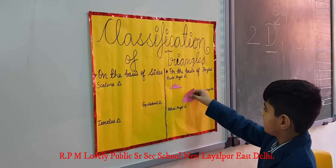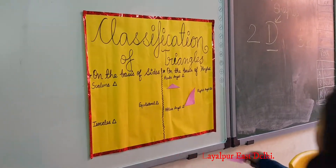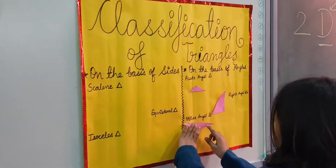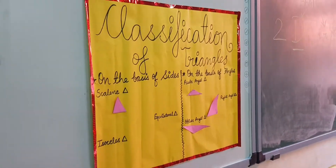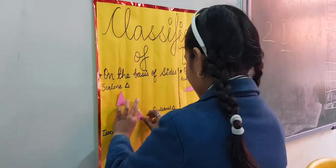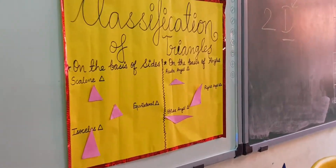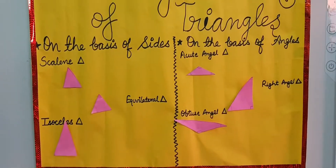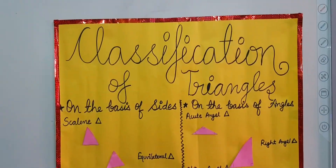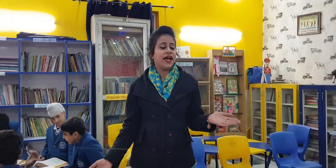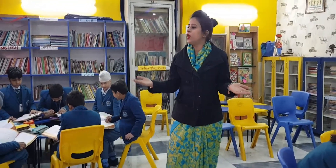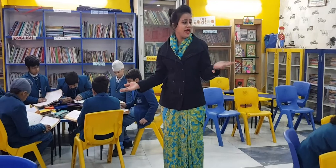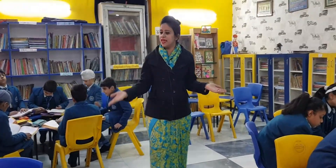Students have measured the different triangles. Now they will put up on the board their findings about the triangles — how they are classified on the basis of size as well as on the basis of angles. Through this activity, students have identified the classification of triangles.